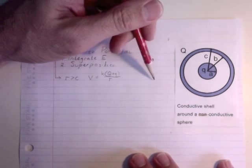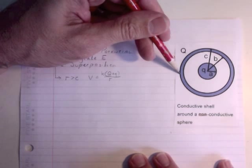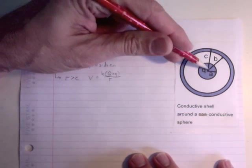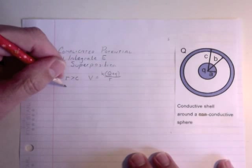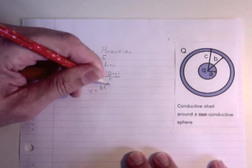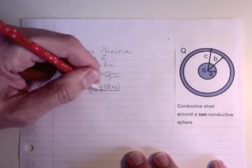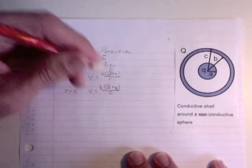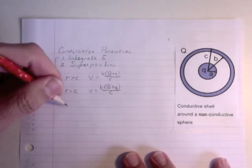Now, as we get in there, R gets smaller and smaller until it's finally equal to C, right? C is that outer radius. So at R equals C, V equals K, Q plus Q over C. And it seems trivial to do that, but it helps us on the next part.